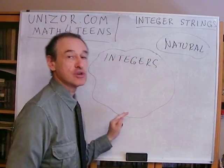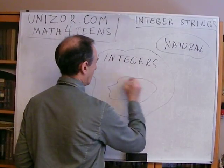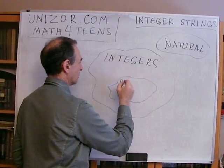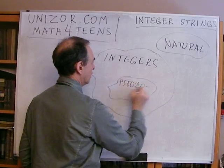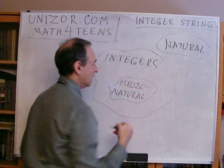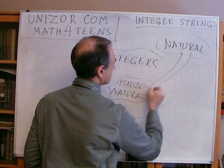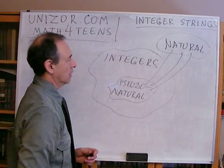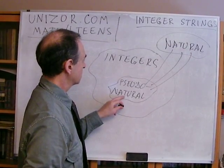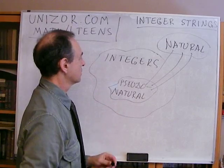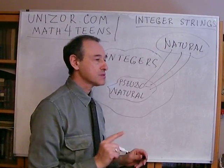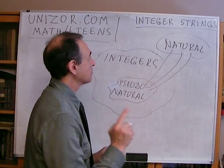Within the set of integer numbers, there is a subset which I can call pseudo-natural numbers. I am saying that there is a one-to-one correspondence between the set of natural numbers and the subset of integers called pseudo-natural numbers. But one-to-one correspondence is not sufficient — here is a much more important quality.